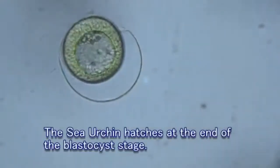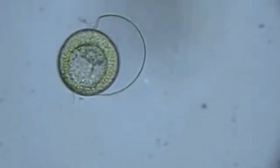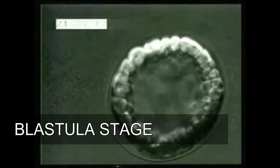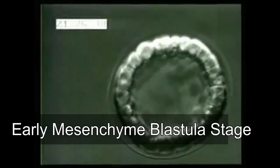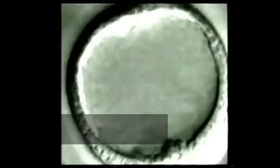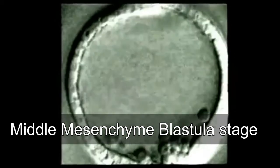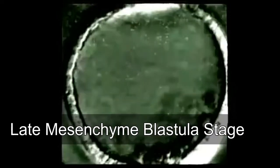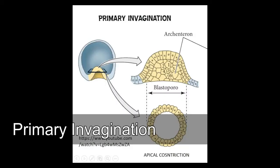Hatching blastula stage: embryos are composed of monolayered epithelium, spherical in shape. Early mesenchyme blastula stage: the vegetal plate thickens, a small number of primary mesenchyme cells appear in the blastocele. Middle mesenchyme blastula stage: ingression of the PMC culminates. Late mesenchyme blastula stage: most PMC have entered the blastocele. The vegetal plate becomes somewhat thinner at this stage. Beginning of primary invagination: the vegetal plate bends inwardly.